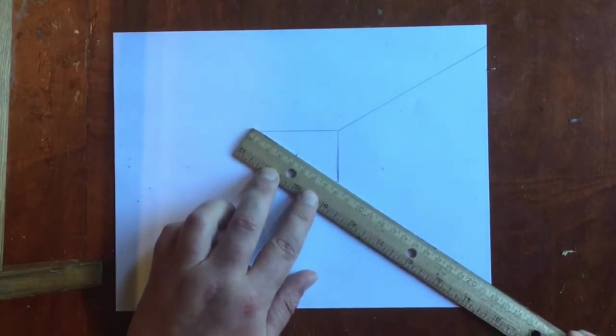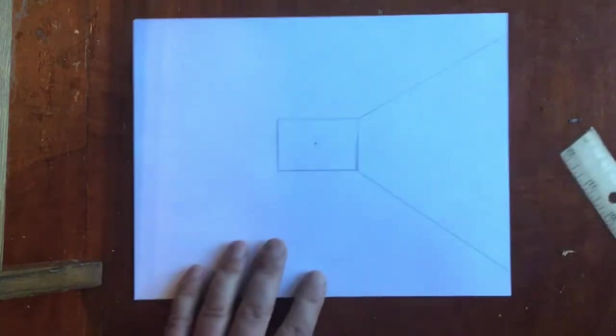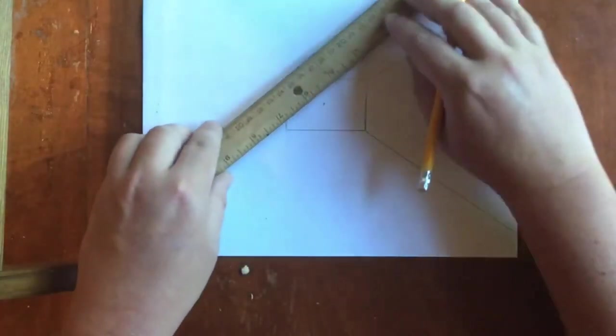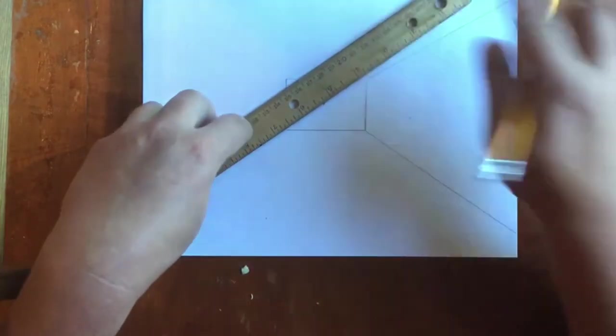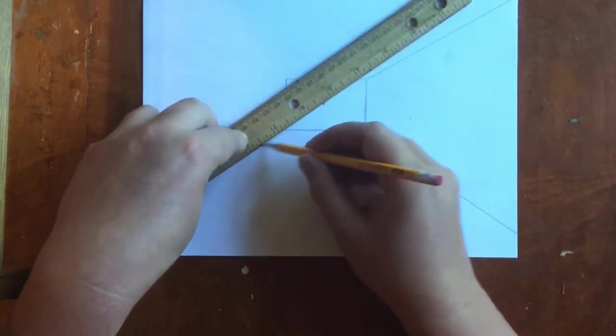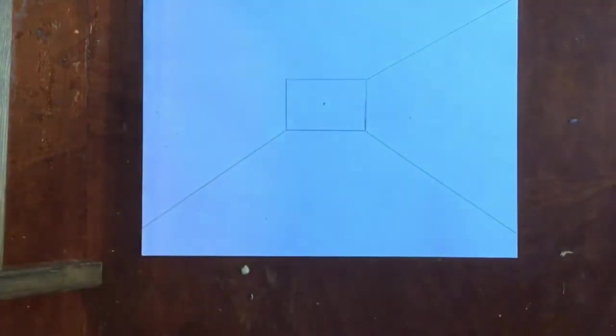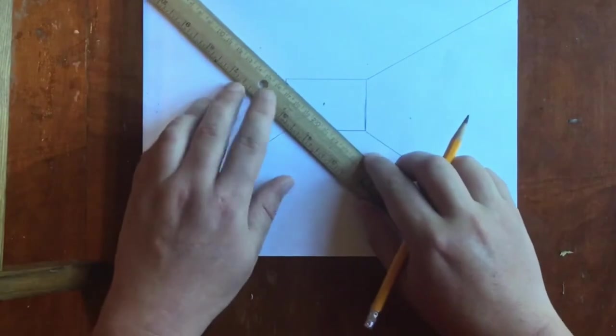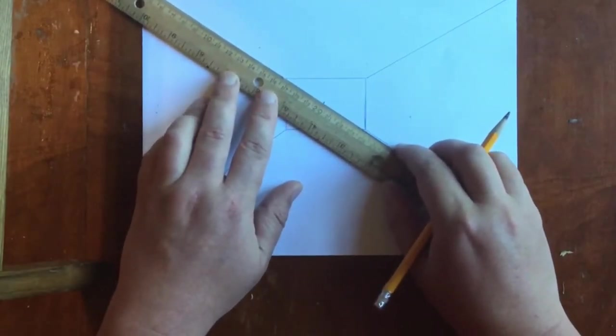Make sure that your ruler is touching the dot and the corner of the rectangle you drew, or else it just won't look right. Line up your ruler with your vanishing point and the corner of the rectangle, and make a line from the corner to the outside of the paper.